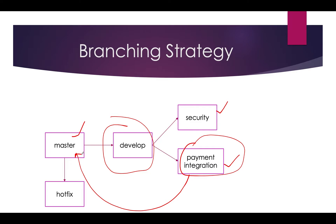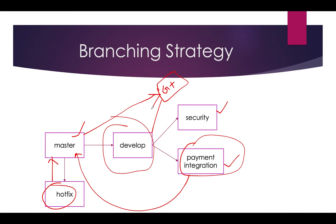Once a branch is 100% tested and successful, it gets merged into master. This is the workflow: each task should be done on its own branch, and once the QA team approves it, you merge into master. If a production bug appears while you're working on a feature branch, you checkout master, create a hotfix, commit it to master, then pull that master code into develop.